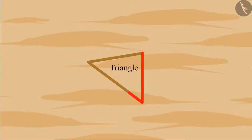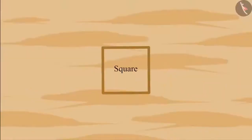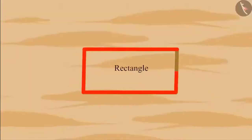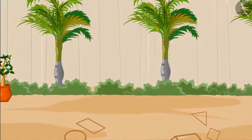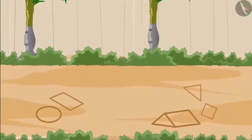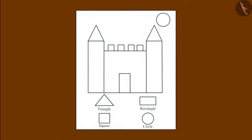So children, do you know what shape this is? Yes, it is a triangle because it is a shape made of three sides. And this one? It is a square because it is a shape made of four equal sides. And this is a rectangle. After playing this game, Chutu and Pinky went to do their school homework. Chutu and Pinky have been given a picture made of different shapes, and they have to identify the shapes and fill them with different colors: yellow in circle, blue in rectangle, red in square, and green in triangle.